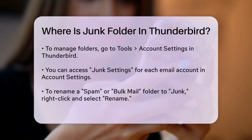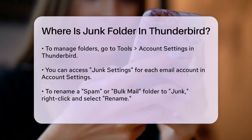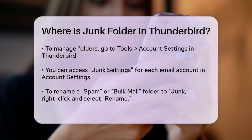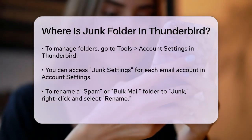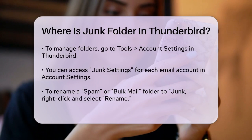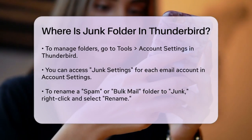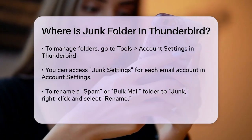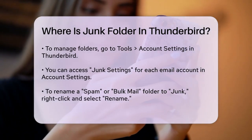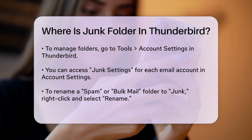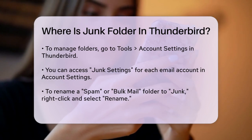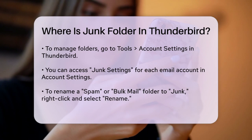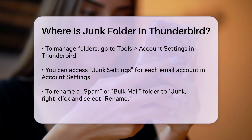Here's how you can manage these folders. Go to Tools, then Account Settings in Thunderbird. Here you'll find the junk settings for each of your email accounts and also in the Local Folders section. If you have a spam or bulk mail folder that you want to rename to junk, simply right-click on the folder and select Rename.